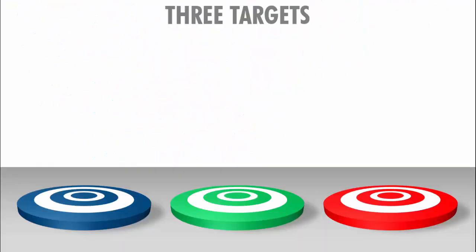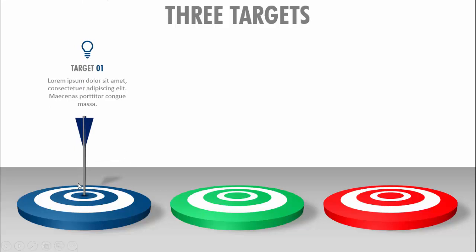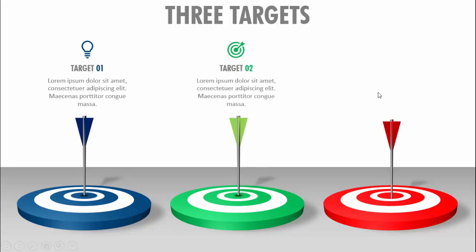In today's tutorial I am going to show you how to create a three targets infographic slide in PowerPoint. The slide works like this: I have put three targets in different color combinations, and when I click, the arrow comes and hits the target, then it will show you the target title, the detailed text, and an icon.